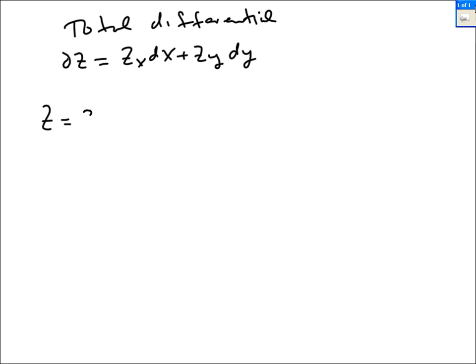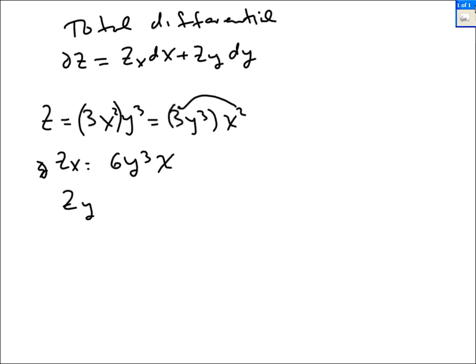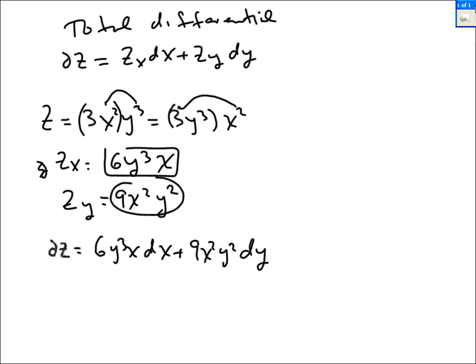So if z is equal to 3x squared y cubed we want to find the total differential. So we need z sub x. Think of 3y cubed as the constant times x squared. So z sub x is 2x. You multiply the 2 by the 3y cubed you get 6y cubed x. That's z sub x. Z sub y think of 3x squared as a constant. The derivative therefore will be 3 times the constant times y squared. So partial z is this times dx plus the partial with y times dy.